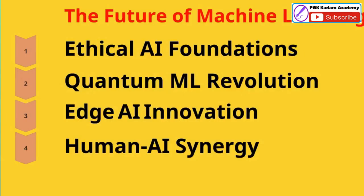Machine learning is entering a new era of transformative breakthroughs, with the convergence of several key emerging technologies: ethical AI frameworks, quantum ML, edge AI, and human-AI synergy. Ethical AI is critical to ensure fairness, transparency, and accountability as ML systems become more advanced and pervasive. Quantum computing's exponential processing power will unlock solutions to previously intractable ML challenges. Edge AI brings sophisticated ML capabilities directly to devices for real-time processing. The human-AI partnership will amplify our creativity, decision-making, and problem-solving abilities. Together, these innovations promise not just incremental improvements, but fundamental shifts across industries.